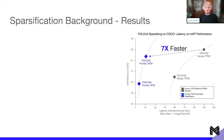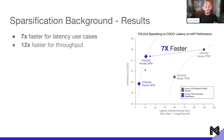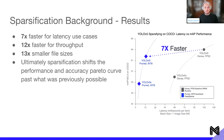Talking through results: we can get 7x faster for latency use cases with our standard YOLO v5L and YOLO v5S — pruning and quantizing gets us that new line. So 7x faster for latency, 12x faster for throughput, and 13x smaller file sizes. Ultimately, sparsification is shifting the performance-accuracy Pareto curve past what was previously possible — shifting that curve to the left so that we end up with better performance at higher accuracy, past what was possible through just standard compound scaling of model sizes.